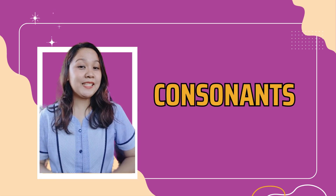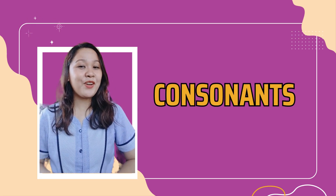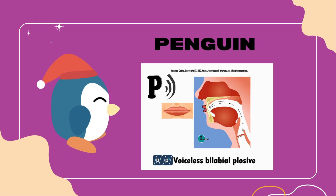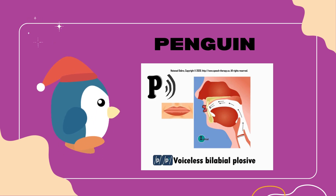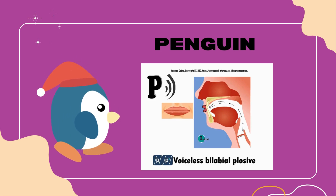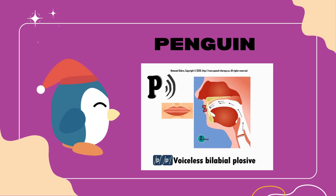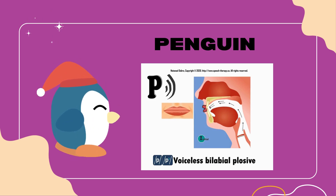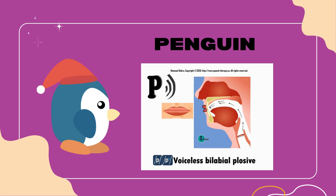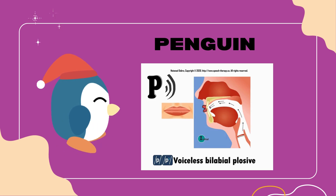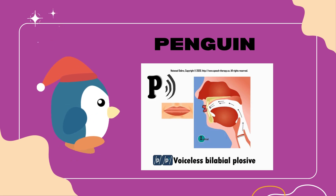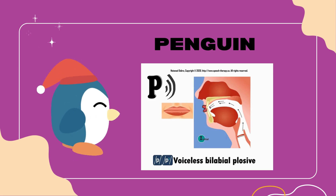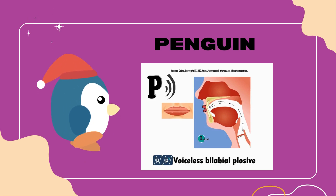Let's start with some examples of consonants. Penguin starts with the letter P, which represents the voiceless bilabial plosive sound P. When we say penguin, we forcefully release air through our closed lips, creating a small burst of sound.